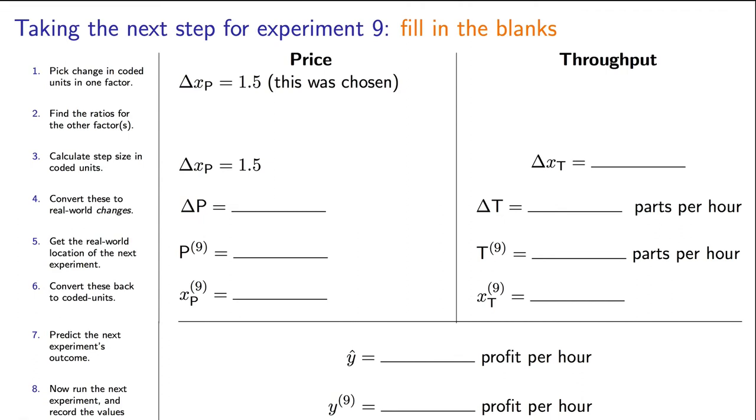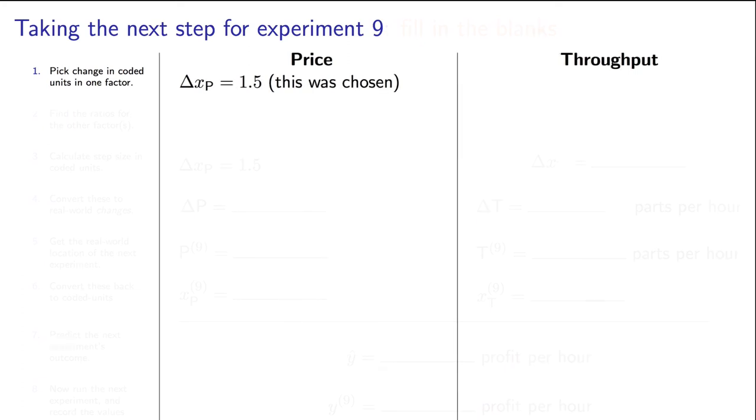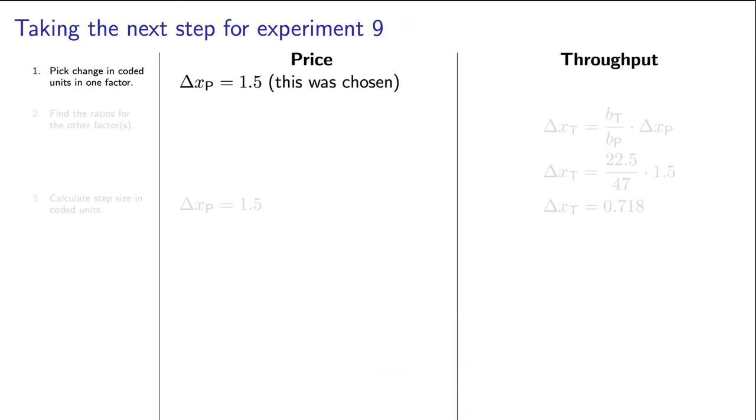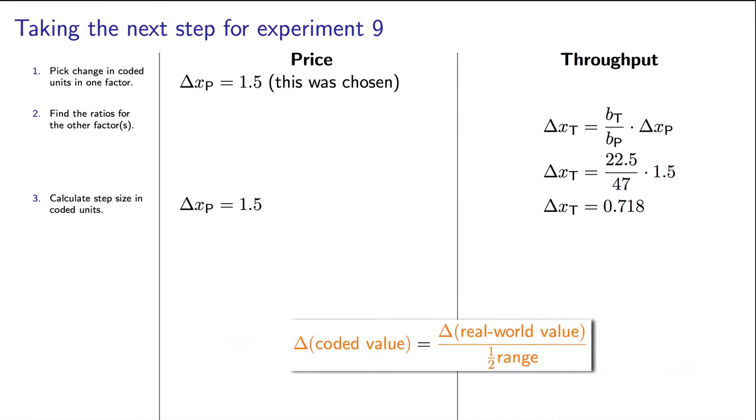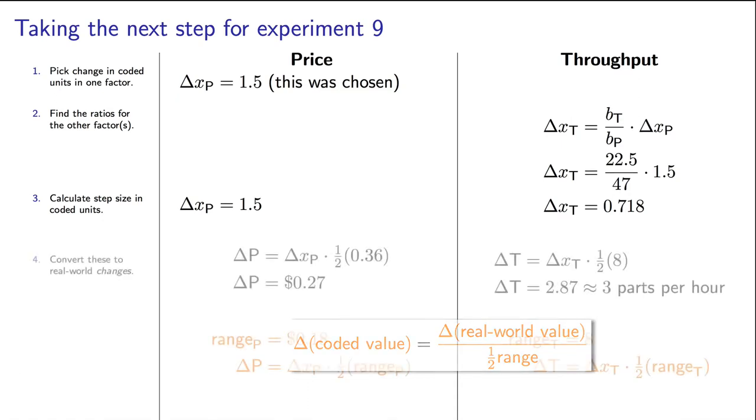In the prior video, I ended by asking you to take a step size with delta xp equal to 1.5. If you did that, you would have found the associated delta xt equal to 0.718. Now let's convert these delta lowercase x's to their uppercase real-world changes using the formulas we introduced in the prior video. For throughput, this lowercase delta xp corresponds to an increase of 2.87 parts per hour, which we round to three parts.